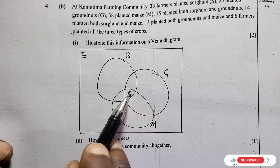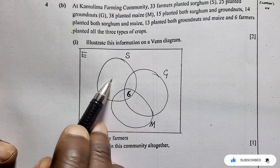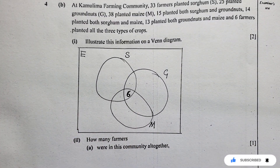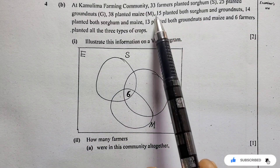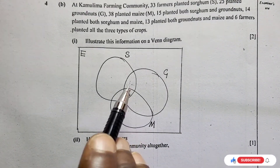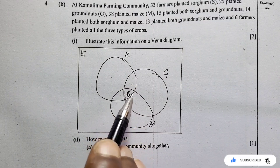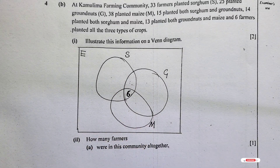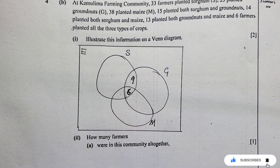Then you go outwards. Let's start with those who planted both sorghum and groundnuts — that's 15. But there is already a 6 in the sorghum and groundnuts intersection, so we subtract: 15 minus 6 equals 9. We write 9 there, because 9 plus 6 gives you 15. Next, 14 planted both sorghum and maize. We do the same: 14 minus 6 equals 8, so we write 8 in the sorghum-maize intersection.